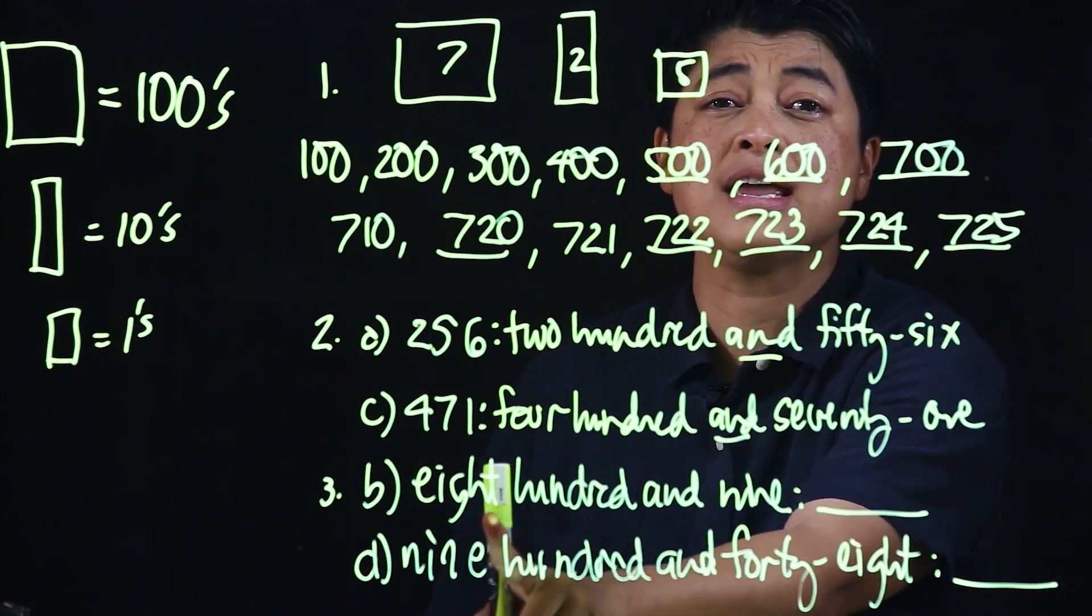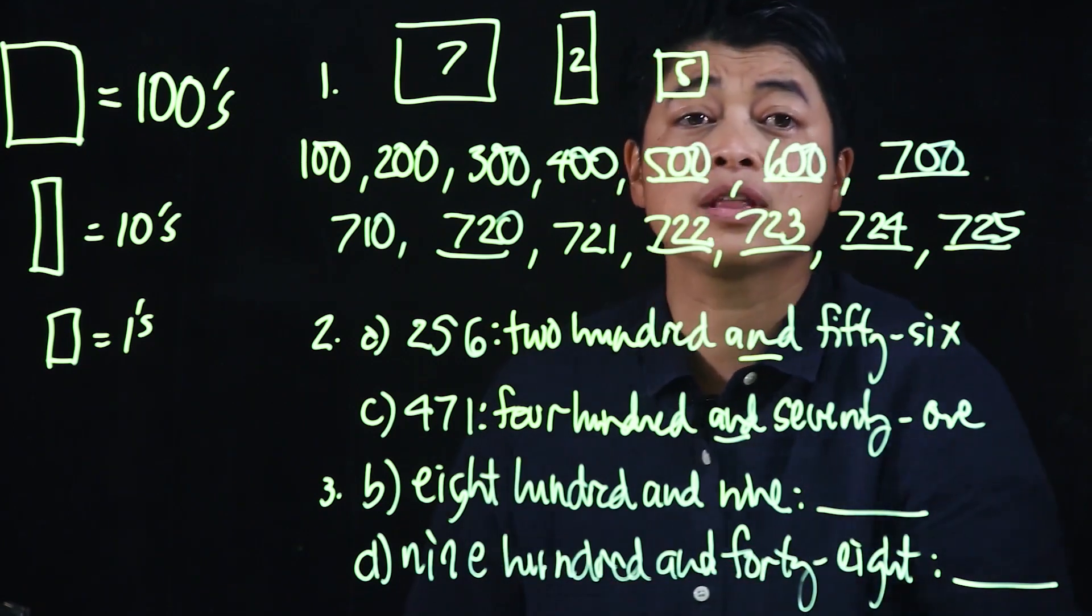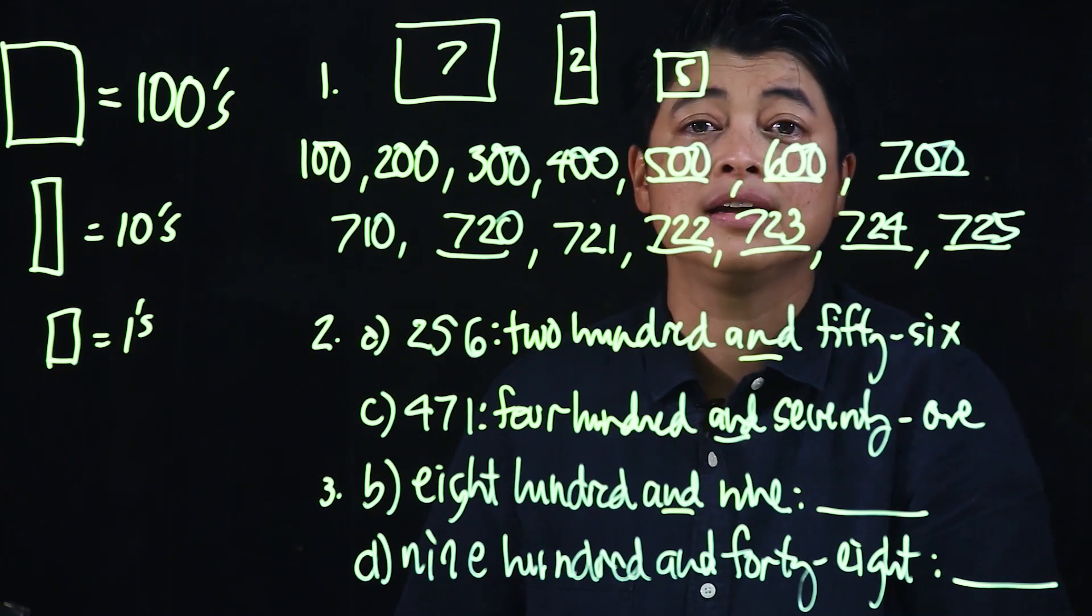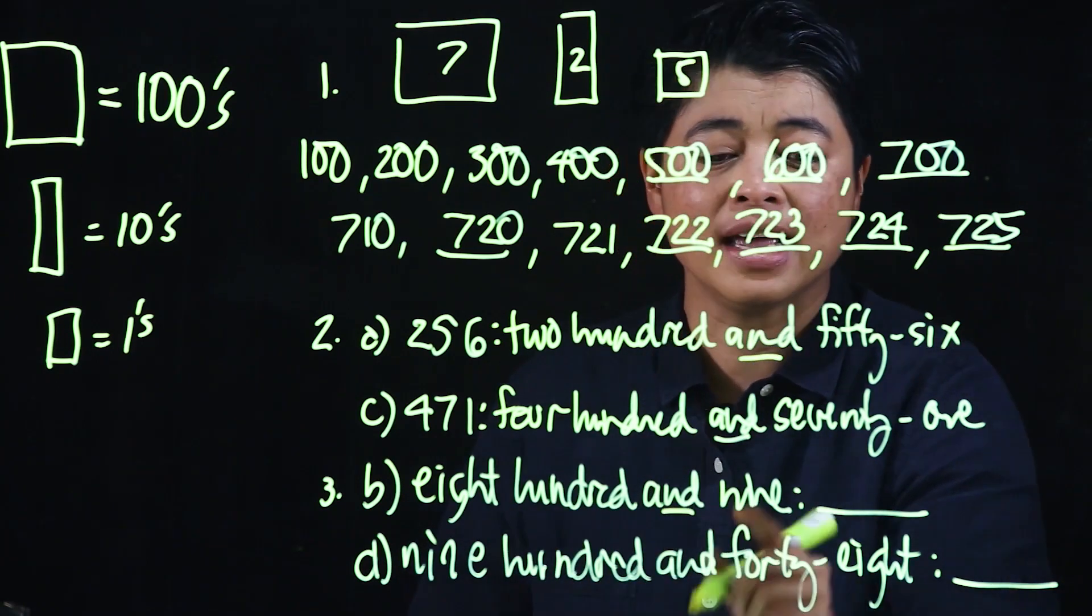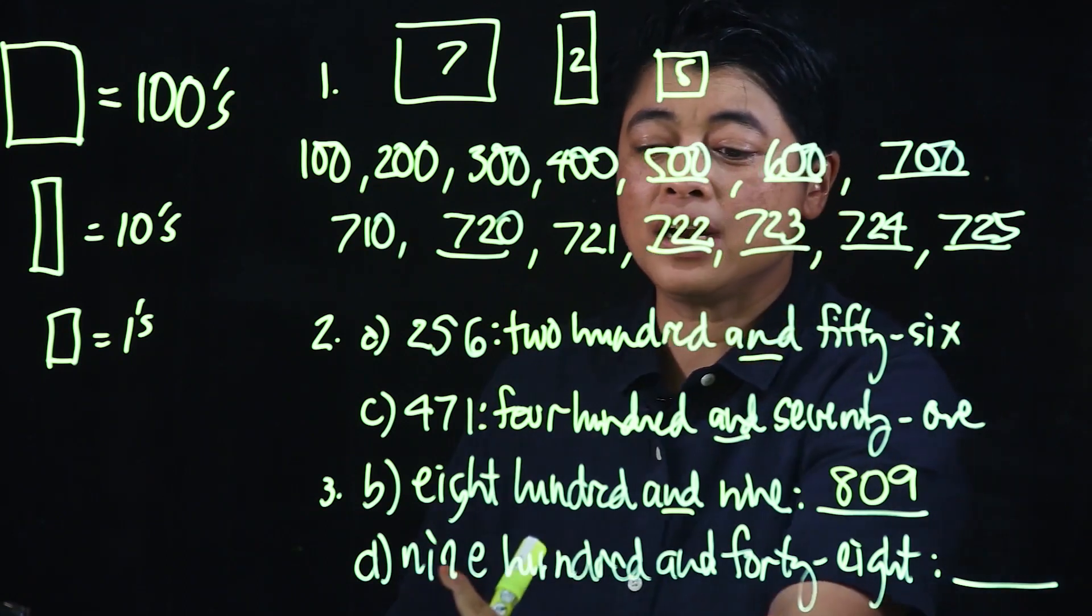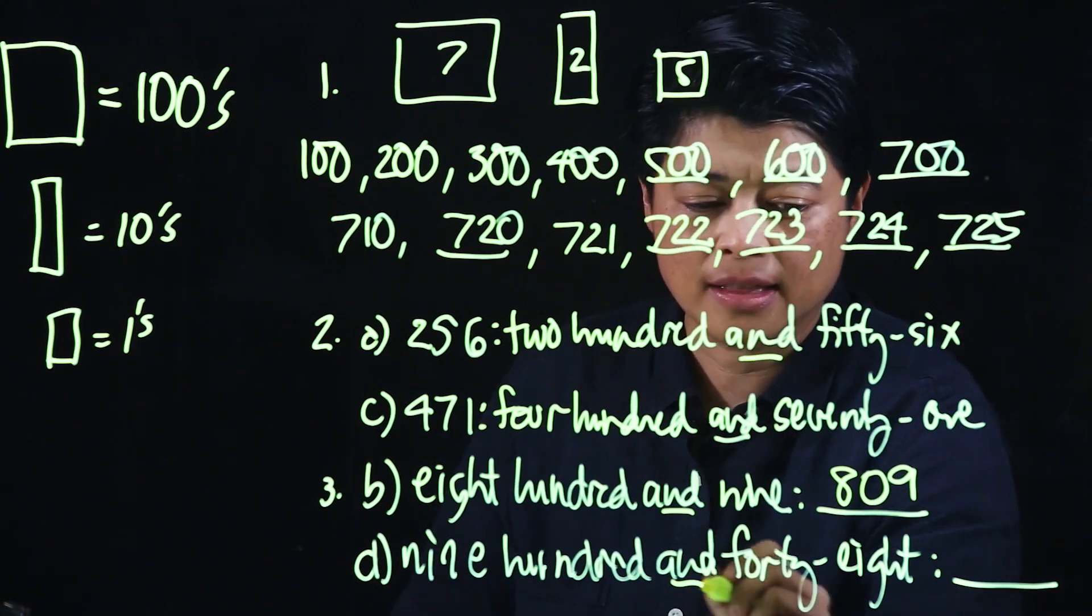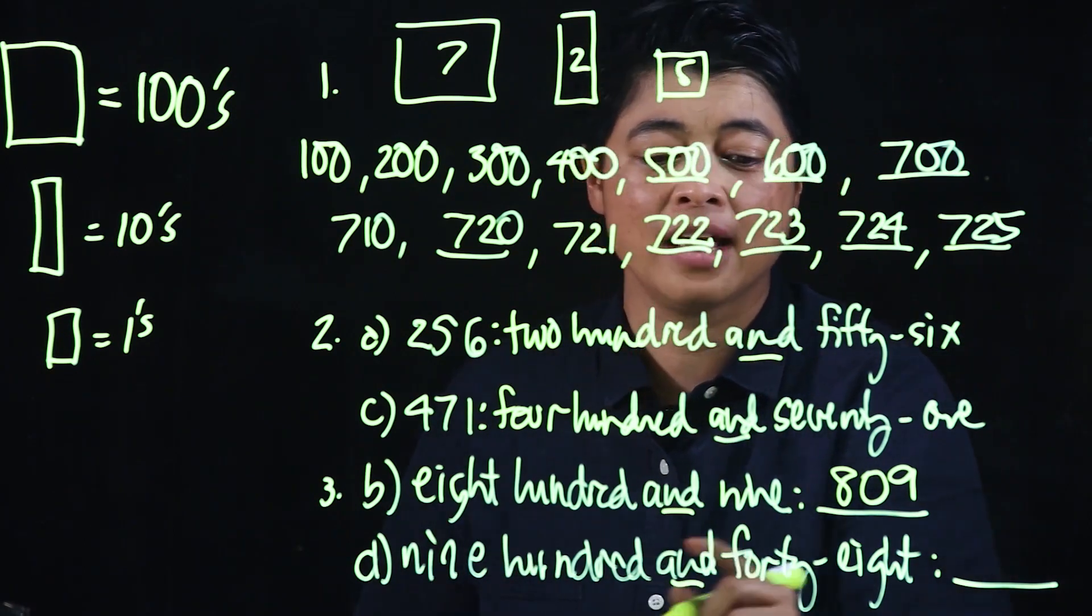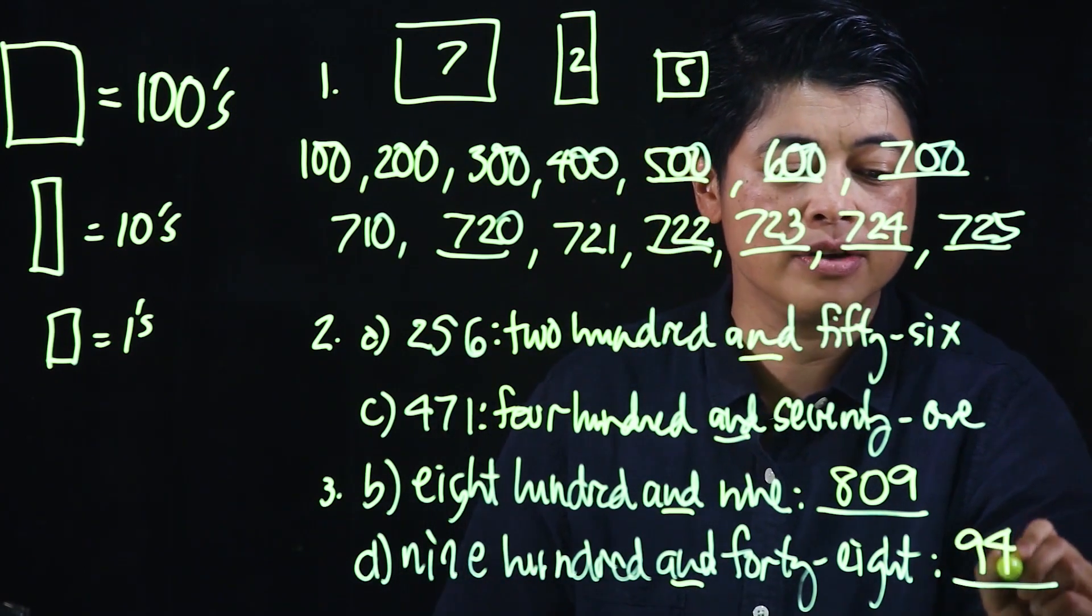As you can see in number three, they are asked to convert the words to numbers. And if you'll notice, there's that 'and'. Therefore, eight hundred and nine is 809. Similarly, nine hundred and forty-eight: there's the dash after forty. So this is 940, 948.